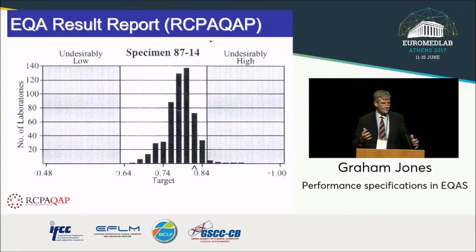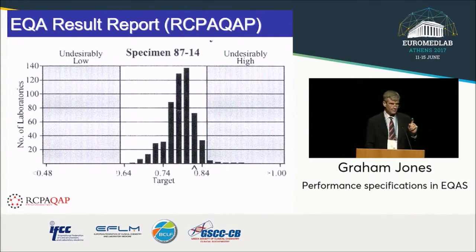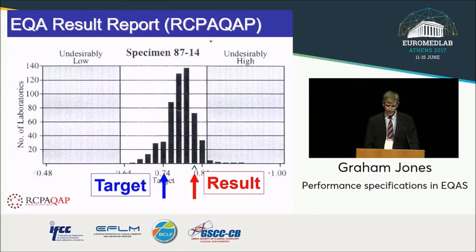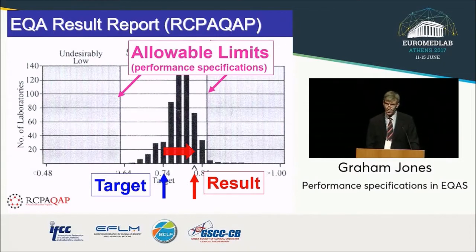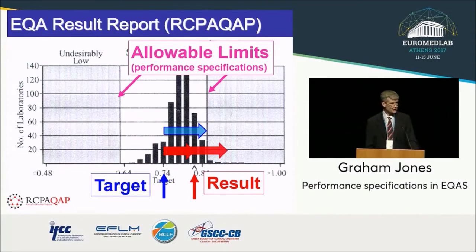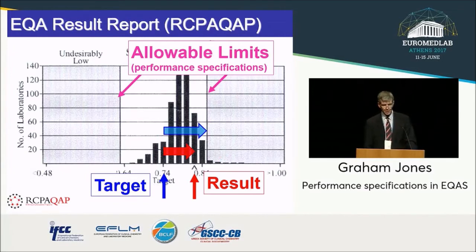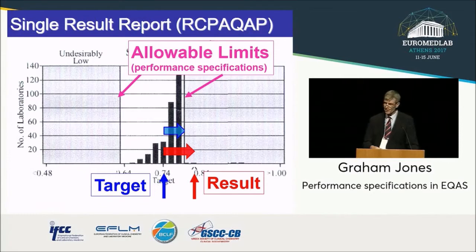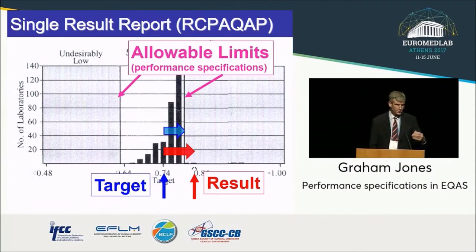To put that in a graphical format — this happens to be from the RCPA, the Australian External Quality Assurance Program. We get a result from a laboratory, a target from which comes a distance from that target, and if you also have performance specifications from the program, then if your result is within that distance, generally we say great, I'm doing fine. However, if our result is outside that, we may take different actions. The quality of specifications can drive activities and actions for labs. If I apply a different performance specification to the same result, the same analytical performance is viewed differently and may therefore change actions from laboratories.